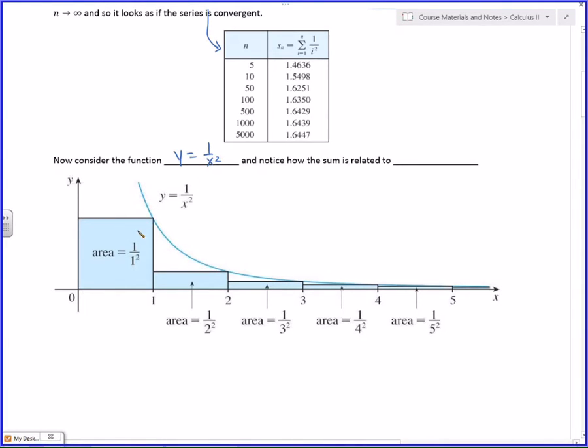This curve right here is the curve 1 over x squared. And the boxes represent an area corresponding to the sum. Notice, here's 1 over 1 squared, 1 over 2 squared, 1 over 3 squared, 1 over 4 squared, 1 over 5 squared, and so on.